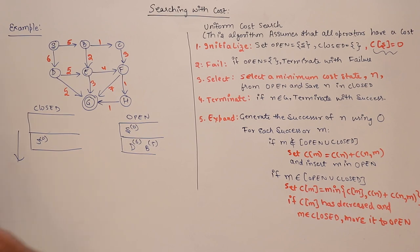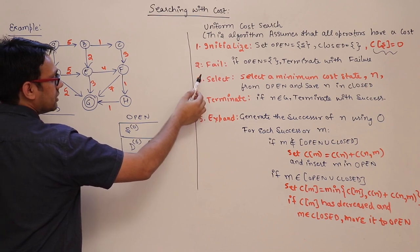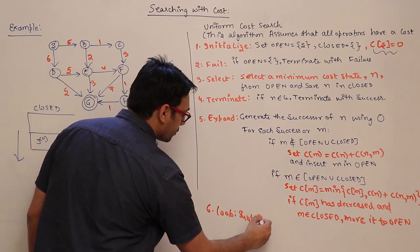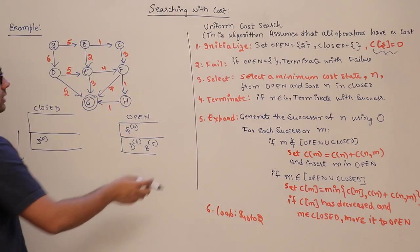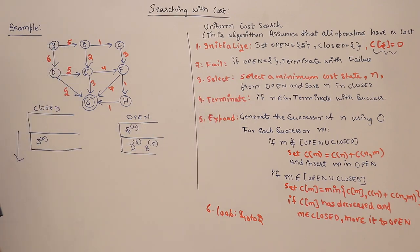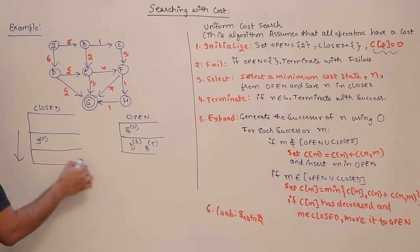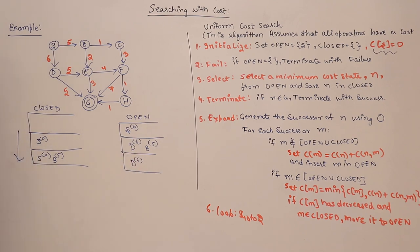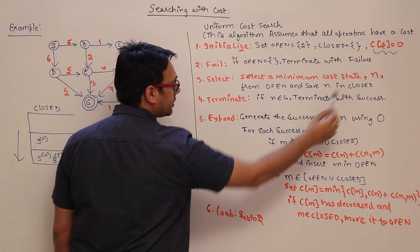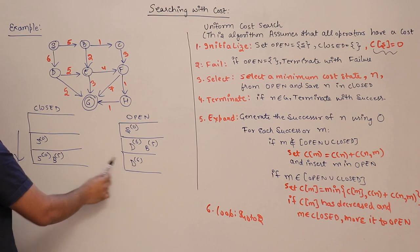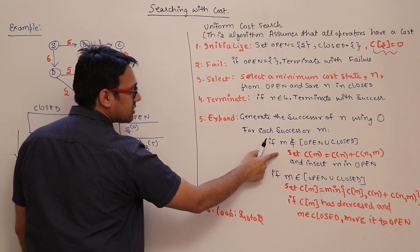We go back to step 2. Open is not empty, so we select the minimum cost state from open. The minimum cost state is B with cost 5. We save B in closed — closed now contains S with cost 0 and B with cost 5. Open now contains D with cost 6. B is not a goal state, so we generate its successors.